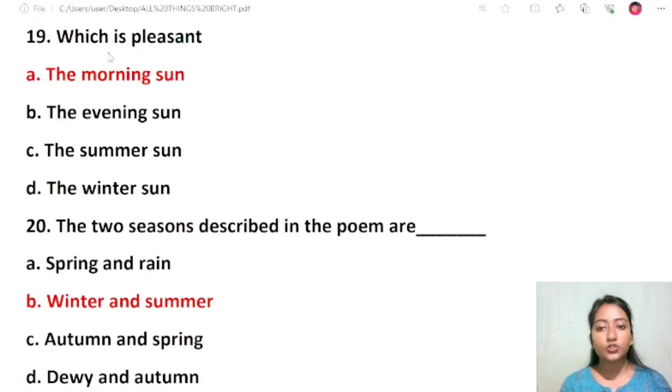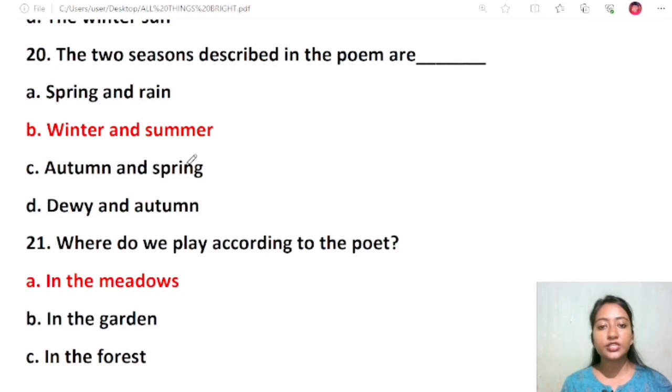Question 18: Which is pleasant? The morning sun, the evening sun, the summer sun, the winter sun. The correct answer is the summer sun. Pleasant summer sun. Question 19: The two seasons described in the poem are spring and rain, winter and summer, autumn and spring, dew and autumn. The correct answer is winter and summer.